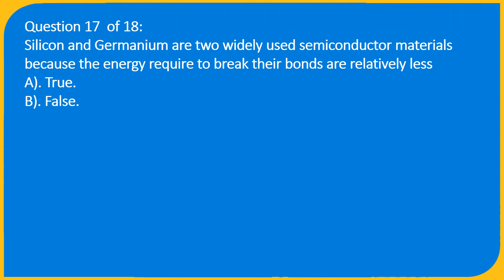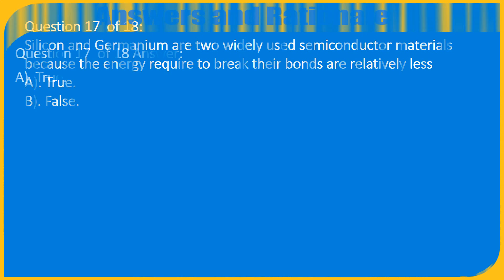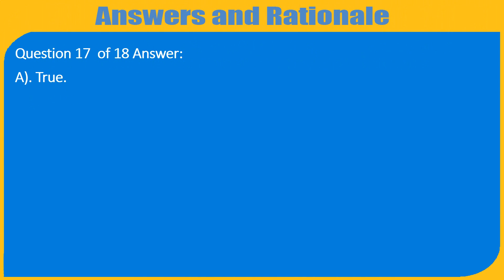Question 17 of 18: Silicon and germanium are two widely used semiconductor materials because the energy required to break their bonds are relatively less. A. True, B. False. Question 17 of 18 Answer: A. True.